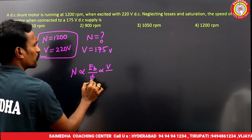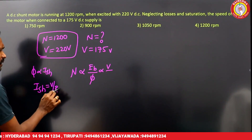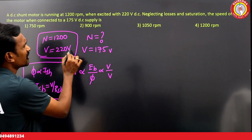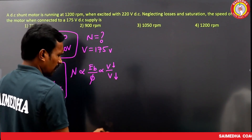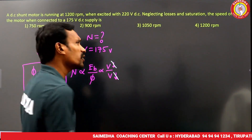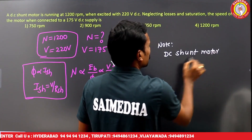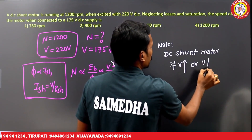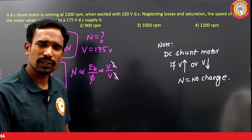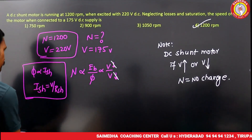In a DC shunt motor, speed is proportional to Eb/φ. The field current Ish = V/Rsh, so φ is also proportional to V. When voltage changes, both Eb and φ change by the same factor — they cancel out. Therefore, voltage changes have no effect on speed in a DC shunt motor. The speed remains 1200 rpm.